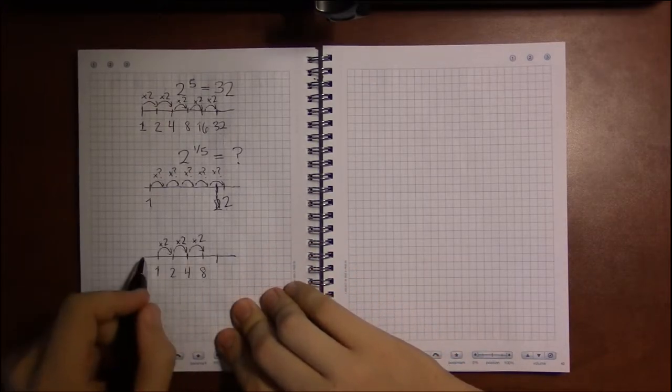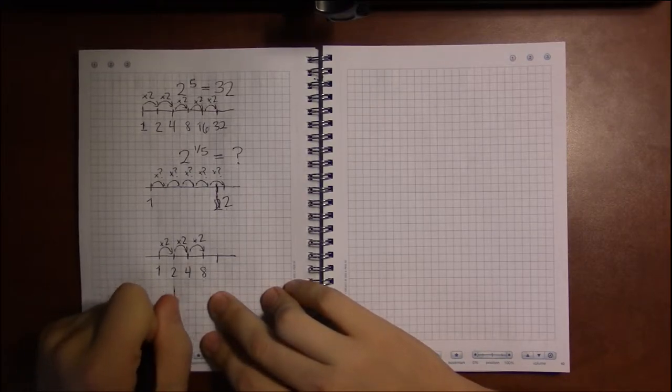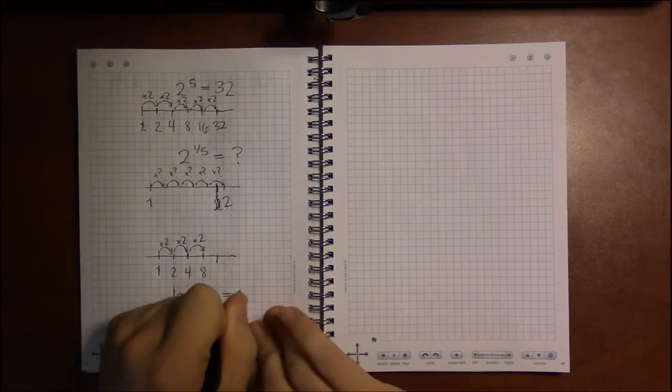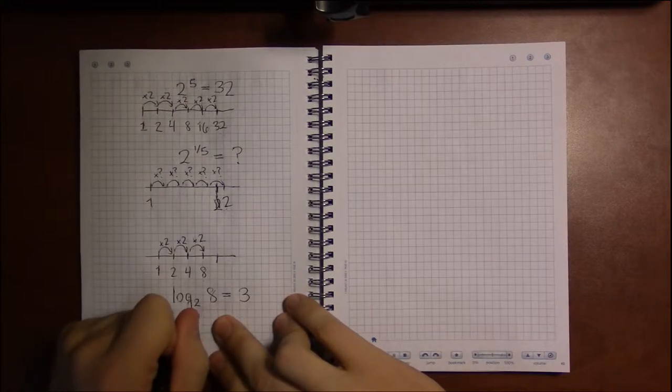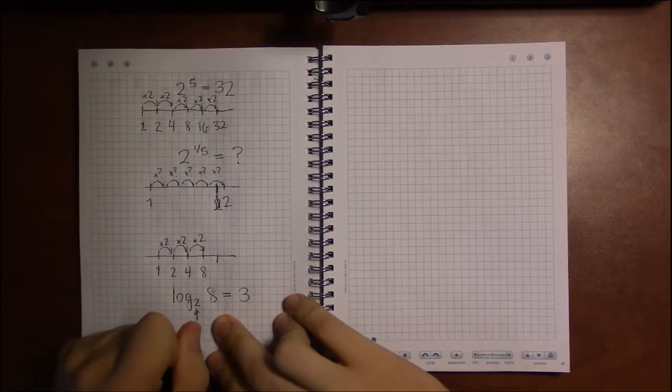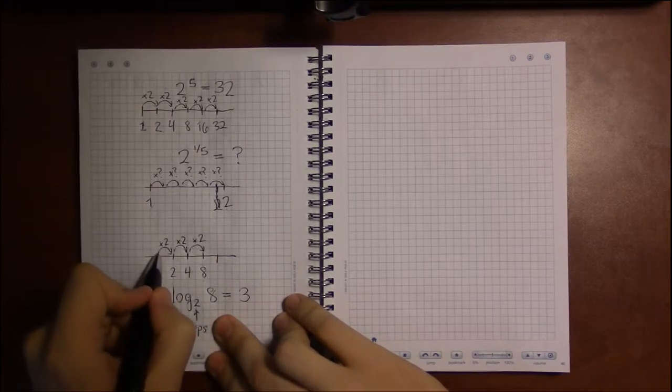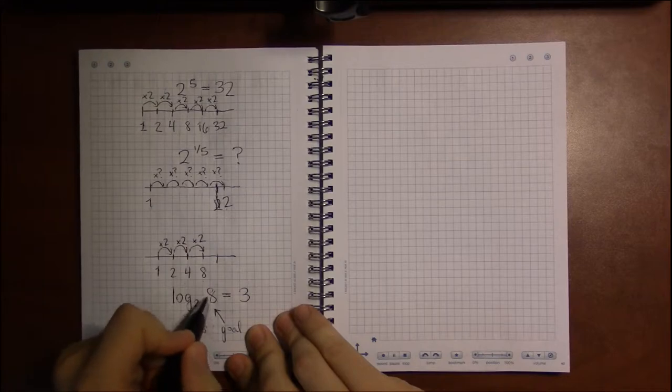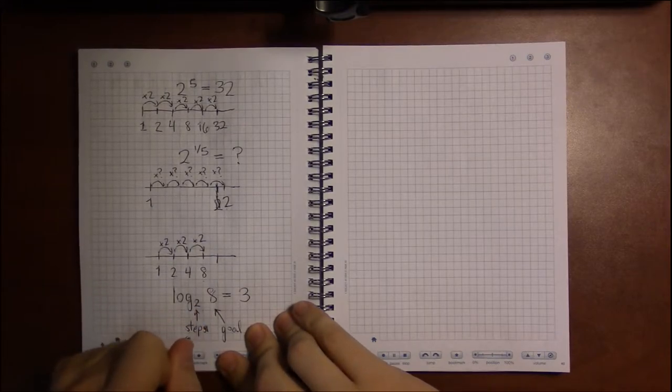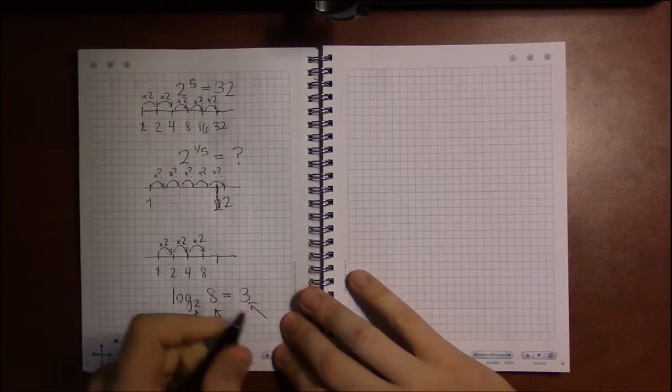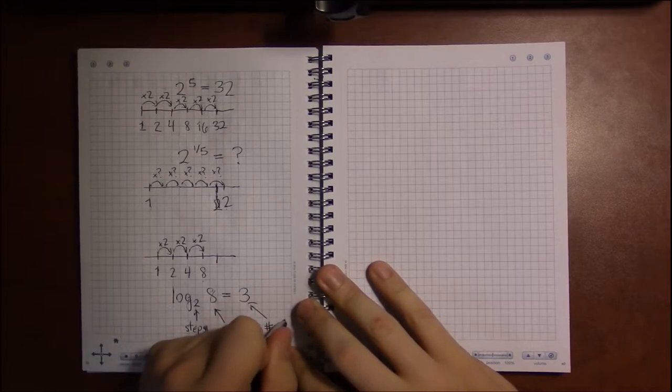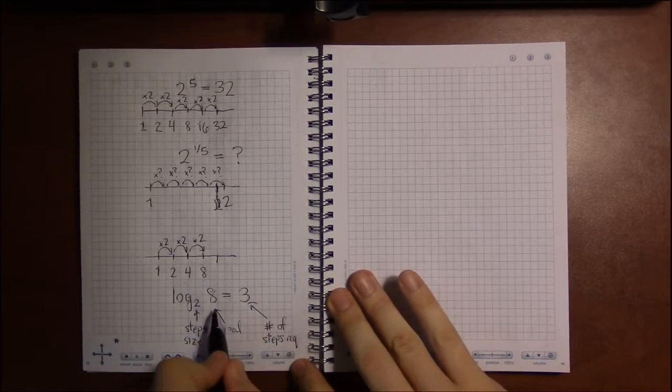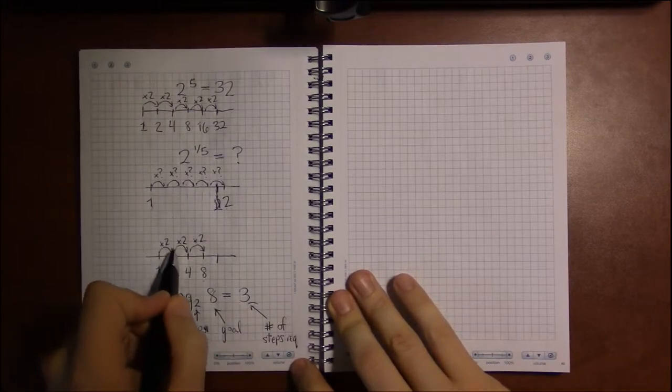So, the notation we're going to use is what we call logarithms. We're going to call this log base 2 of 8 equals 3. This is going to be our step. Our steps are going to be in terms of times 2. Our destination, our goal, is going to be 8. Let's call this step size. So, we can distinguish between 3 as being the number of steps required to get to our goal, using a step size of times 2.